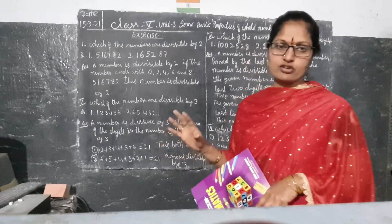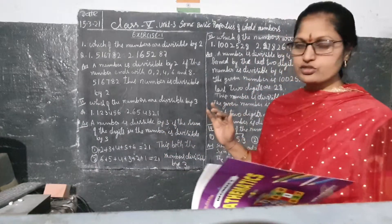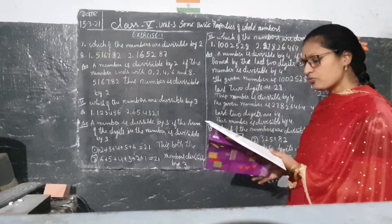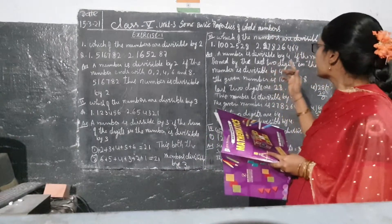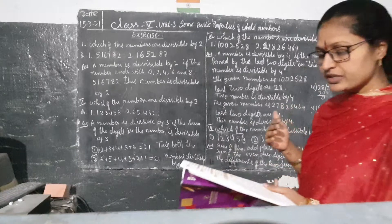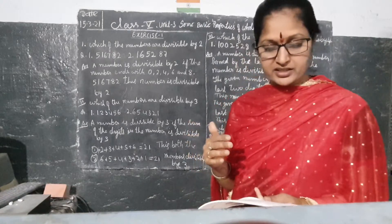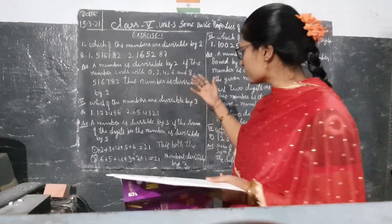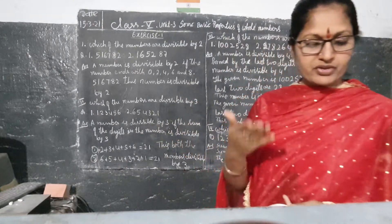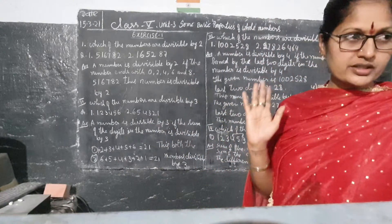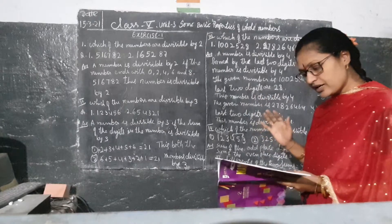Now we will move forward. Next is: which of the following numbers are divisible by both 2 and 3? We have to follow both rules for 2 and 3. Each and every digit we have to find.